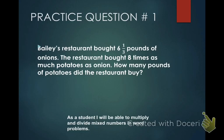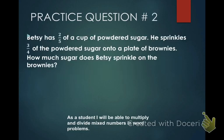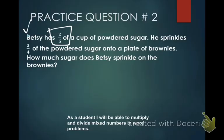Example number two says: Betsy has two-fifths of a cup of powdered sugar. He sprinkles three-fourths of the powdered sugar onto a plate of brownies. How much sugar does Betsy sprinkle on the brownies? I'm going to underline this time. I see the word of — I see it twice. There's no other signal words, so I'm going to go ahead and multiply.